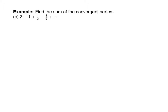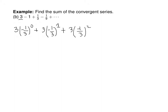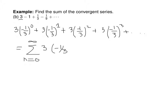Next we have a series where the terms are alternating, so we need a negative in there somewhere. It looks like my a is 3. So 3 times negative 1 third to the 0 gives our first term, plus 3 times negative 1 third squared gives 1 third, plus 3 times negative 1 third to the third gives negative 1 ninth, and so on.